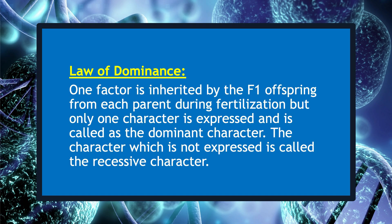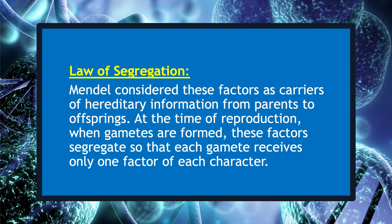On the basis of the above observations, Mendel concluded the following laws. One factor is inherited by the F1 offspring from each parent during fertilization, but only one character is expressed and is called the dominant character. The character which is not expressed is called the recessive character. This is known as the law of dominance. Mendel considered these factors as carriers of hereditary information from parents to offspring.